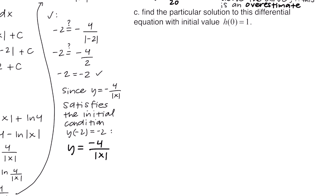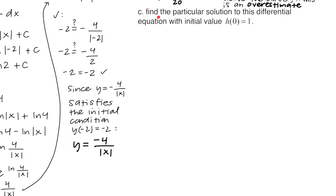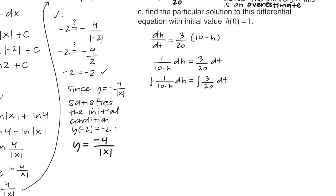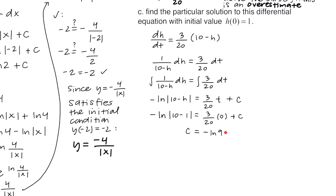Part c: find the particular solution with h(0) = 1. Separating variables: move dh/(10 − h) to the left and (3/20)dt to the right. Integrating the left side with u = 10 − h gives -ln|10 − h|. Integrating the right gives (3/20)t + c. Plugging in the initial condition h(0) = 1: -ln|10 − 1| = 0 + c, so c = -ln 9.